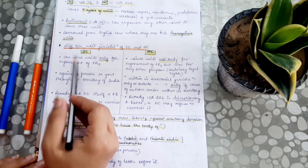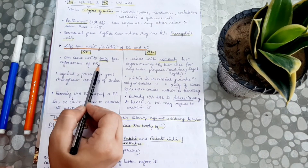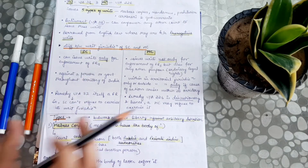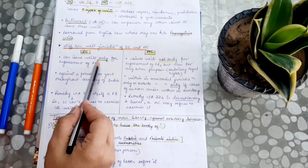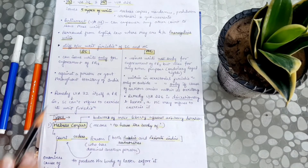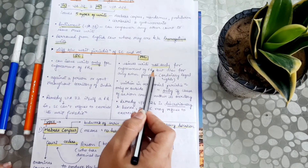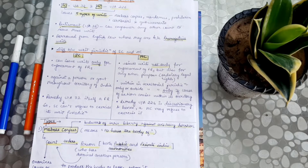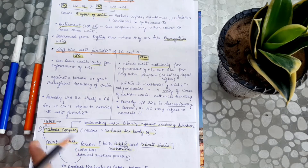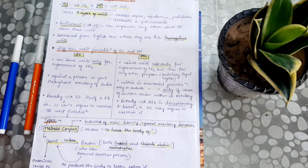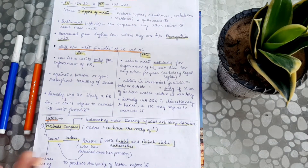The Supreme Court issues writs only for the enforcement of fundamental rights. If fundamental rights are aggrieved, the Supreme Court can issue writs. But the High Court can issue writs not only for fundamental rights — they can also do it for any other purpose or ordinary legal rights. So, we can say that the High Court's writ jurisdiction is wider compared to the Supreme Court.